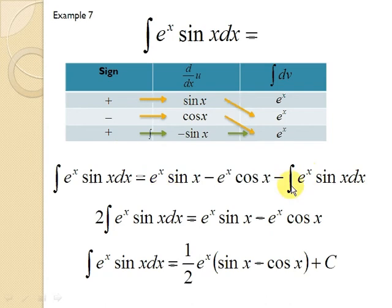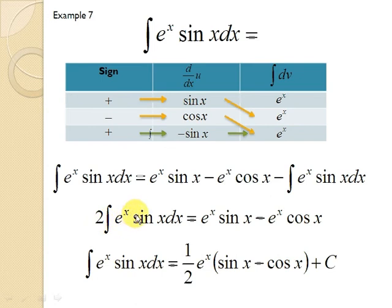You find that the integral of e^x sin(x) dx appears on the left-hand side as well. So you add this e^x sin(x) integral term to both sides, then you have 2 times the integral of e^x sin(x) dx equals e^x sin(x) minus e^x cos(x).